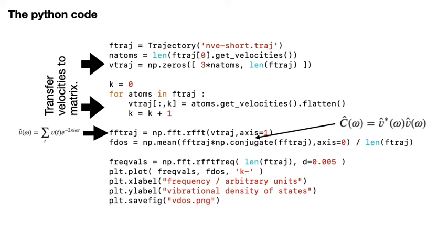The final vibrational density of states is not a matrix, it is a function, and we will thus need to convert this matrix to a vector. In this code we make this conversion by averaging over all the components of the velocity of the atoms as shown here. We can average over all the atoms and all the components because all the components of the velocity should be identical — all the atoms have the same type, so every component of the velocity of every atom should have the same vibrational density of states. Each component of each atom is giving us a separate estimate of the vibrational density of states, and these are what we are averaging. All that is left to do is plot the final results. The Python library used for the Fourier transform also provides a function that tells us the frequencies at which the Fourier transform has been evaluated, and we can use the method rfftfreq, as shown here, to get the x values at which to plot the FDOS values.